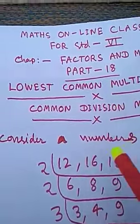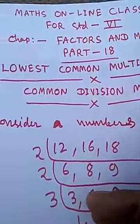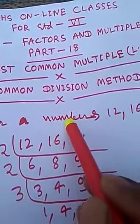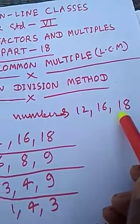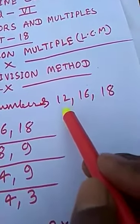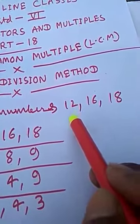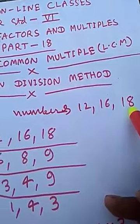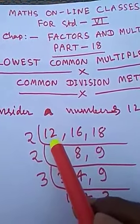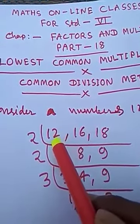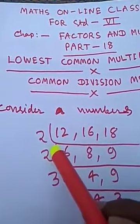How can you find out the LCM by common division method? Consider the numbers 12, 16, and 18. There are three numbers — 12, 16, and 18 — and we have to find their LCM by the common division method. We shall write the numbers in a row: 12, 16, 18.